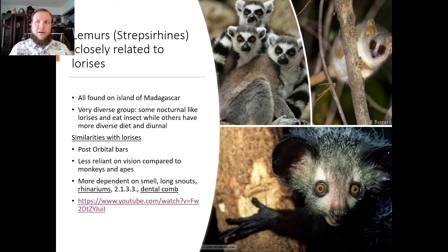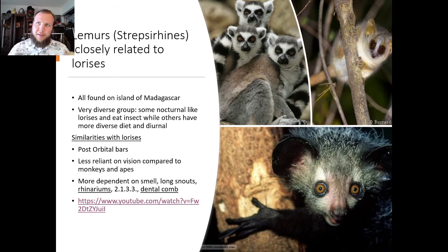Lemurs are closely related to lorises and are only found on Madagascar. They're a very diverse group — some are more nocturnal and eat insects like lorises, while others have more diverse diets and are diurnal. They also have post-orbital bars and are less reliant on vision compared to monkeys and apes, being more dependent on smell, with long snouts, rhinaria, and a 2-1-3-3 dental formula with a dental comb. There's a video on the aye-aye if you want to see more about how unique it is.